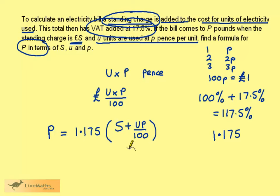Let's just examine the formula. The part in the bracket here is the standing charge added to the cost for units of electricity used.